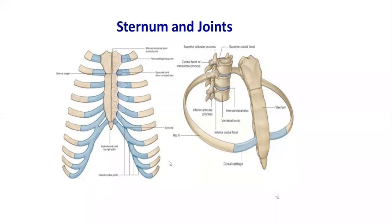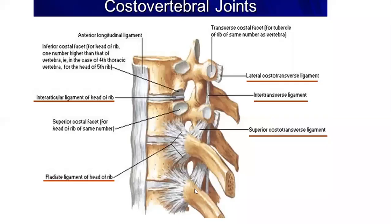The ligaments of these intervertebral joints comprise the anterior and posterior longitudinal ligaments. The anterior longitudinal ligament is attached to the anterior aspect of the vertebral body, while the posterior aspect is supported by the posterior longitudinal ligament.